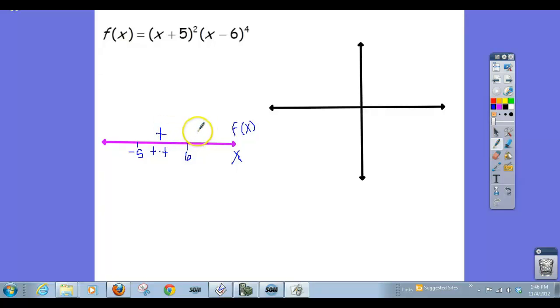I claim that I know there should be a plus here. The reason I say I know that is because if you look at the zero negative 5, its multiplicity is 2, which is even. So we know the graph is going to bounce.